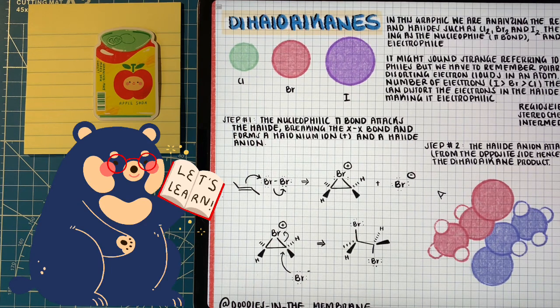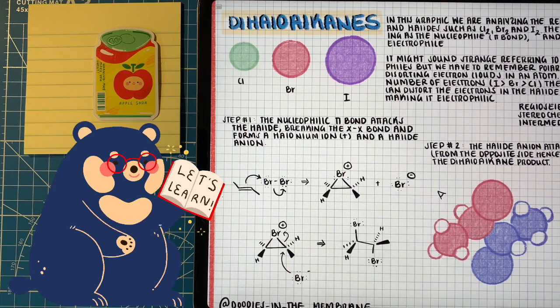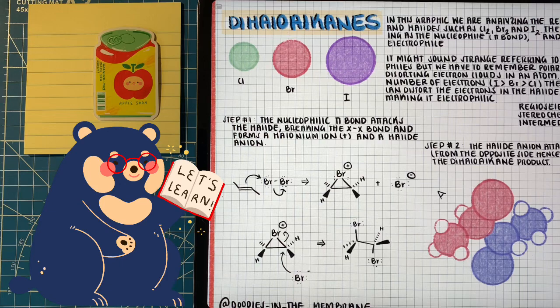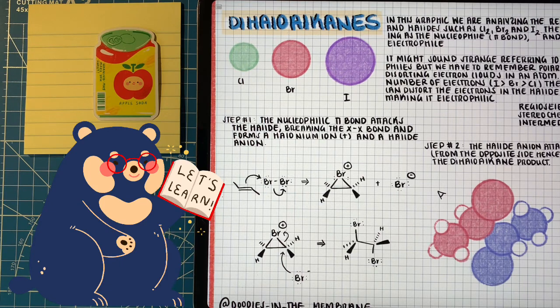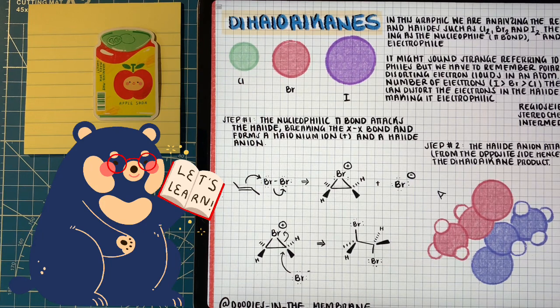Now this is not a carbocation. This is the result of the halide being slightly attached to both of the double bond carbons, giving the halide a positive charge. This reaction ends with the halide ion that we produced in the last step attacking our cyclic intermediate at the opposite end resulting in our product, a dihalo alkane.